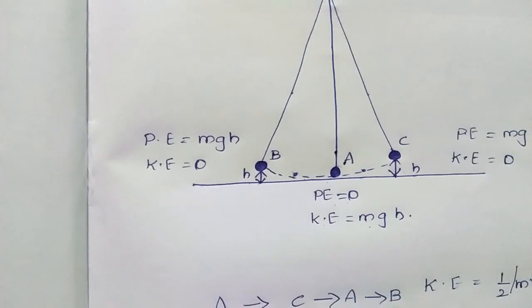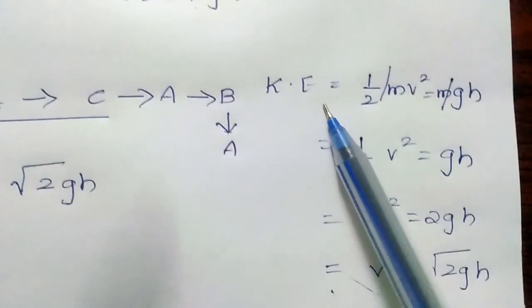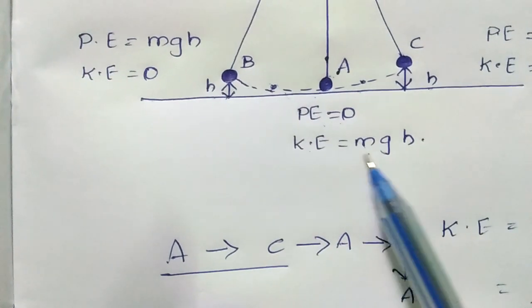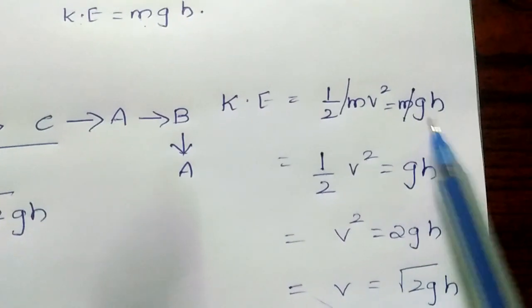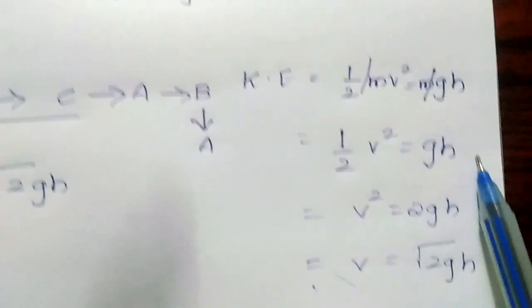Normally, kinetic energy is half mv squared. Here, the kinetic energy is taken as mgh. So half mv squared equals mgh. Cancelling M on both sides, half v squared equals gh.